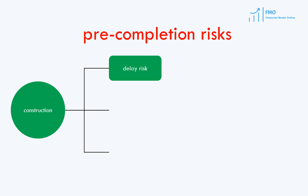Delay risk is an important risk that needs management and mitigation. This risk is dealt with through an EPC contract, where the EPC contractor will have to pay penalties to the project company for each day the project completion is delayed. These penalties are usually equivalent to the costs that the project company incurs, including the cost of lost opportunities. Essentially, the losses that third parties such as lenders or suppliers make because of the project completion delay are passed through to the EPC contractor.